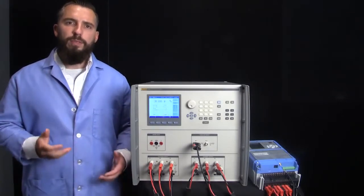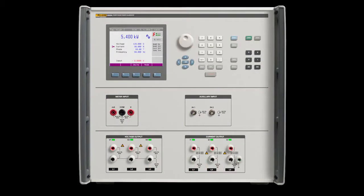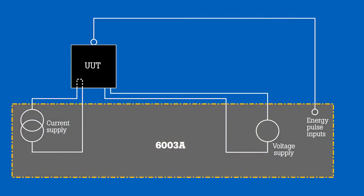How can this process be simplified, you may ask? The answer is the Fluke Calibration 6003A three-phase power calibrator. The 6003A was designed specifically for testing energy meters and it makes calibrating and testing them simple. It combines all three necessary pieces of equipment into one simple, easy-to-use calibrator.